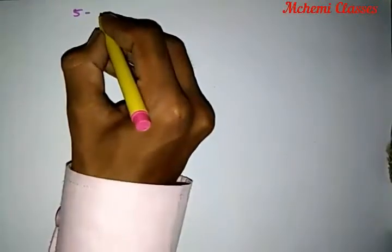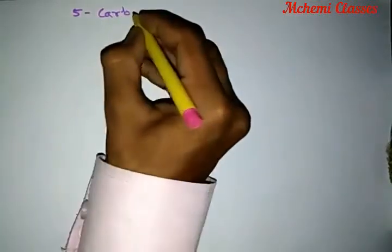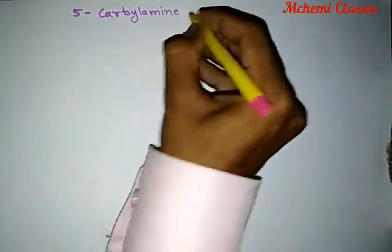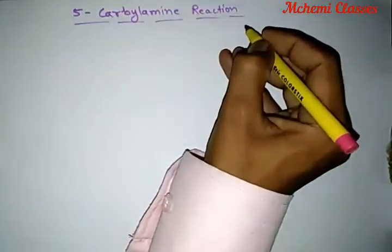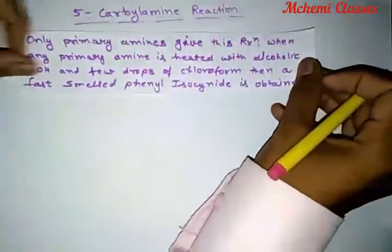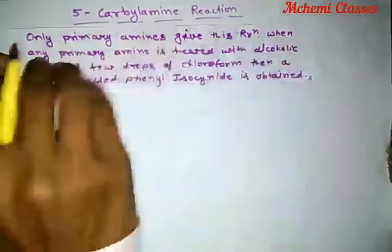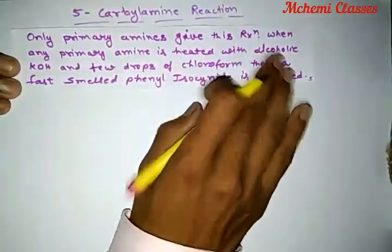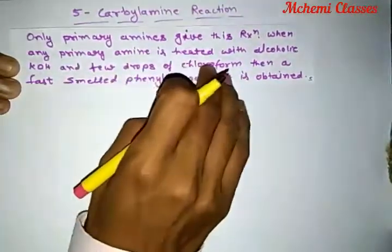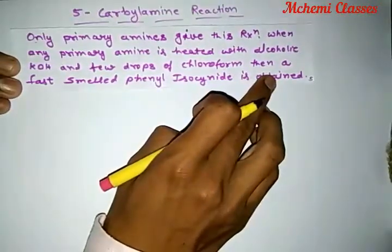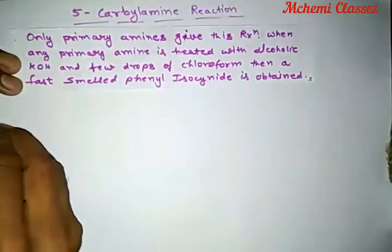This is also a very common reaction — No. 5: the Carbylamine reaction. The definition for this reaction is that only primary amines give this reaction. When any primary amine is heated with alcoholic KOH and a few drops of chloroform, a foul-smelling isocyanide compound is obtained.